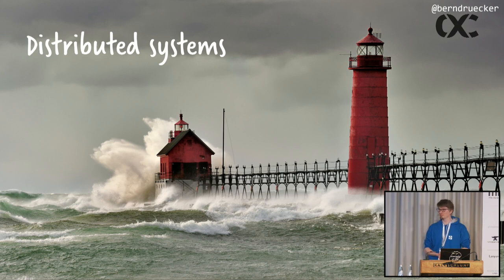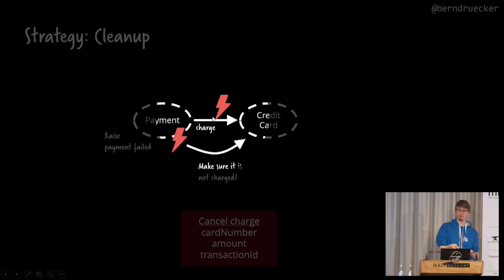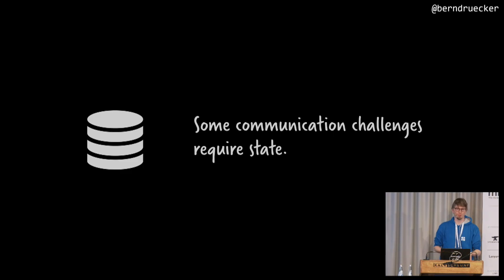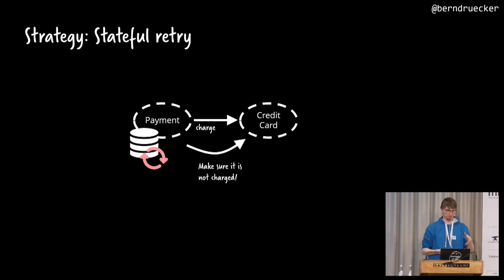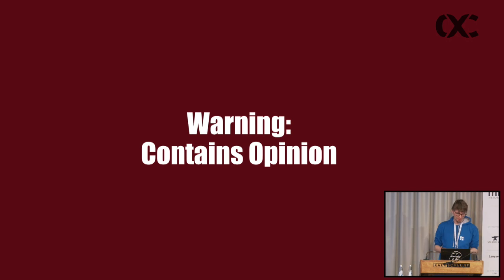Because we're in these distributed systems, some of these patterns — like the cancellation — require some kind of state handling. If the service was not available when I called it, it's probably also not available when I want to make sure it wasn't called. Some things require state handling. I want to quickly look into how a stateful retry and more importantly a stateful cancellation looks. I want to make my personal bias transparent here. I'm co-founder of Camunda, an open source workflow engine vendor.